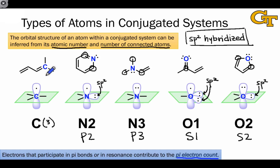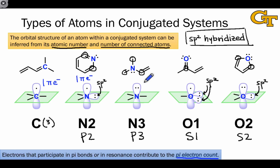Based on these orbital pictures, we can identify the number of pi electrons contributed by each atom. Carbon participating in a pi bond brings in one pi electron into the pi system; the other carbon it's attached to brings in a second to establish the pi bond. The N2 nitrogen similarly brings in one pi electron. The N3 nitrogen contains a lone pair within a p orbital, meaning it brings in two pi electrons. With O1 we're back to one pi electron, and with O2 we again have two pi electrons brought in by that building block. The big idea is that we can recognize these atom types within conjugated systems and infer, from the atom type and number of connections, how many pi electrons are contributed and which electrons are in hybrid versus p orbitals.